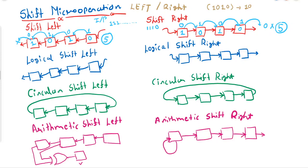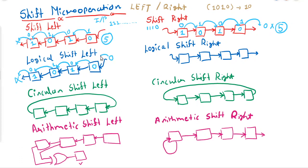Let us discuss logical shift. Taking our reference value of variable A as 1010, in logical shift left this 0 shifts here, this 0 shifts here, this 1 shifts here, this 0 shifts here — the leading 1 is discarded and a new 0 enters the first position. Converting 0010 to decimal: 2, so the answer is 2. Wait — 1, 2, and 4 gives us the answer as 4.